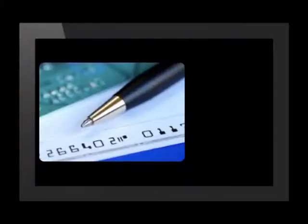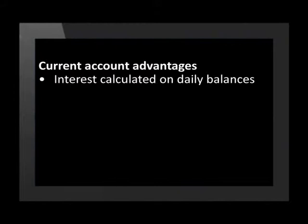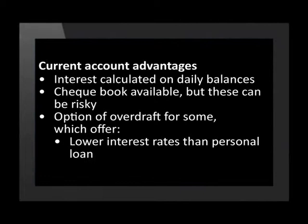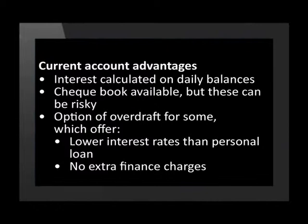Another type of account is a current account, often called a check account. It works in a similar way to a transactional savings account. The main difference is that a current account allows the account holder to write out their own checks and, by prior arrangement with the bank, to have a negative balance called an overdraft. In a check account, interest is calculated on daily balances. It is also possible to issue checks, although checks can often be stolen or forged, so they are risky. Some people can get an overdraft facility, which has a lower interest rate than a personal loan and there are no finance charges to pay, making it a useful form of credit.